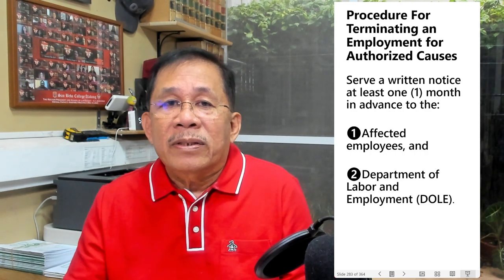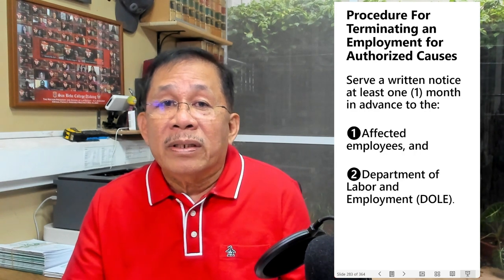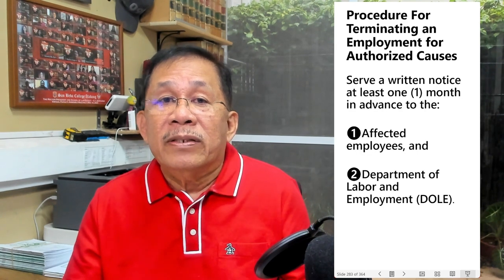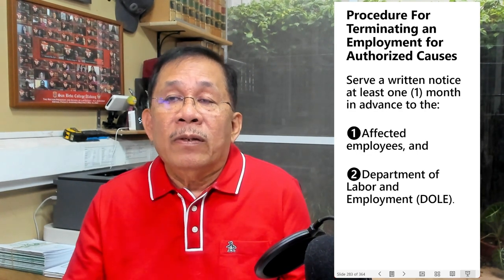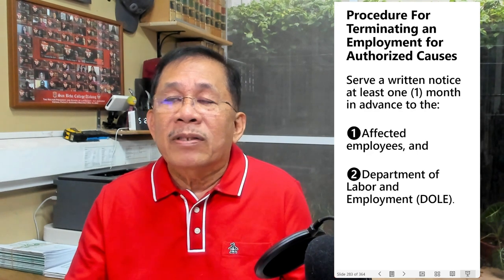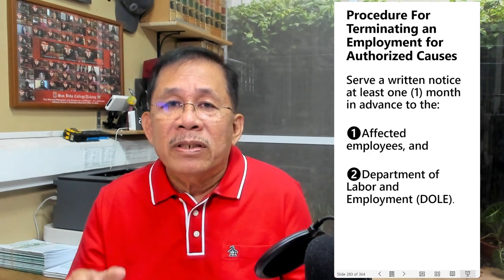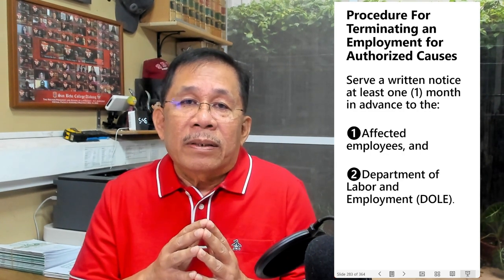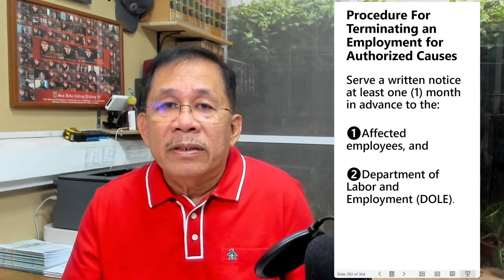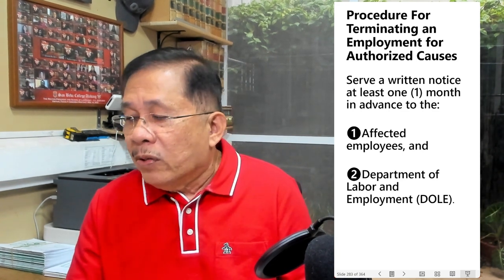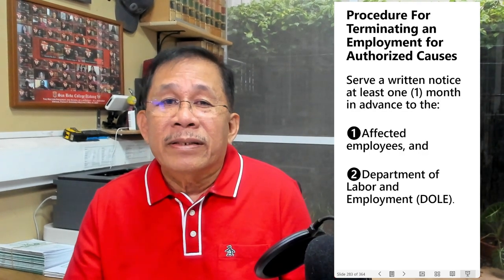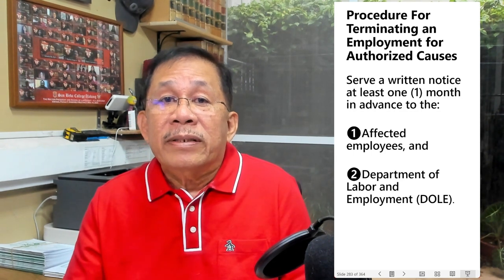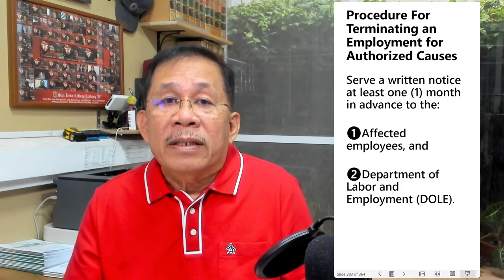Mere posting of the notice on the bulletin board is not substantial compliance. During the one-month notice period, the employer can require the employees not to work anymore, but they should still be paid their wages and benefits during that period. The one-month notice must be complied with even if the employees already knew about the planned action of the employer. If the termination is adjudged to be valid, failure to comply with the notice requirement will not render the termination illegal, but will merely subject the employer to sanction in the form of nominal damages.